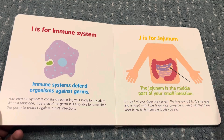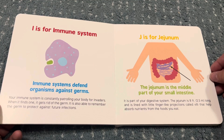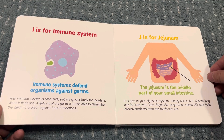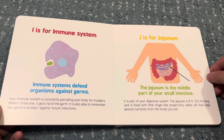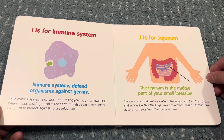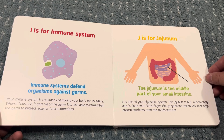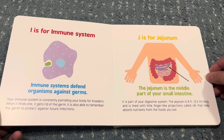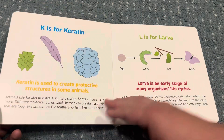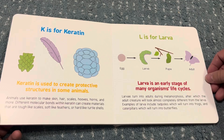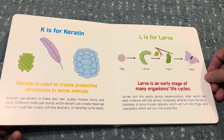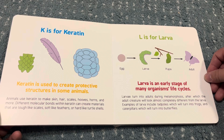I is for immune system. Immune systems defend organisms against germs. J is for jejunum. The jejunum is the middle part of your small intestine. K is for keratin. Keratin is used to create protective structures in some animals.